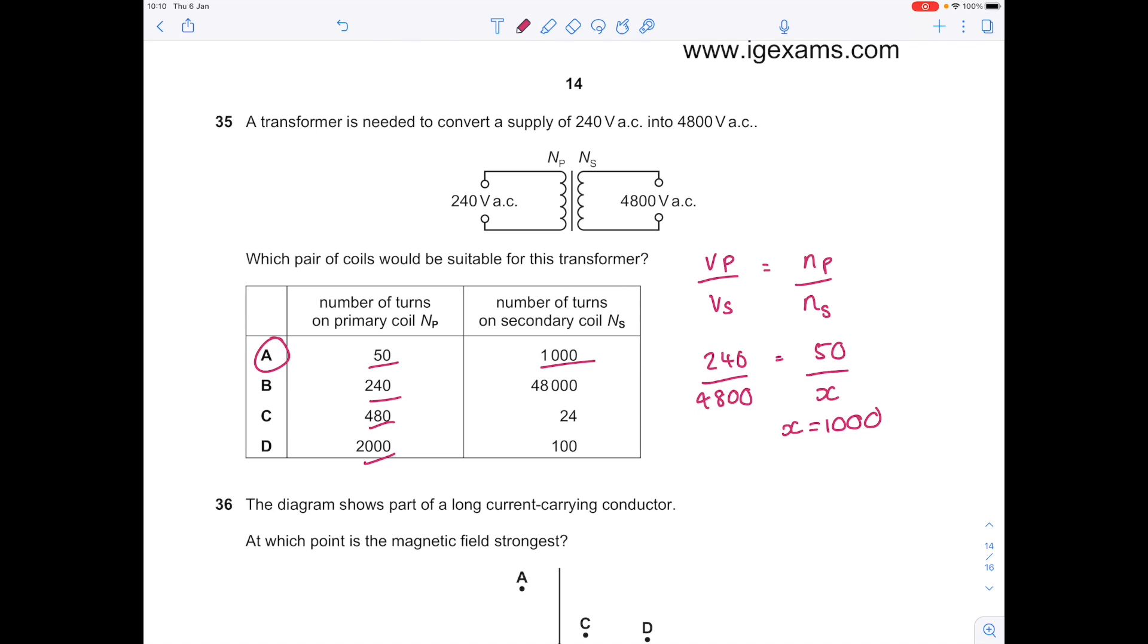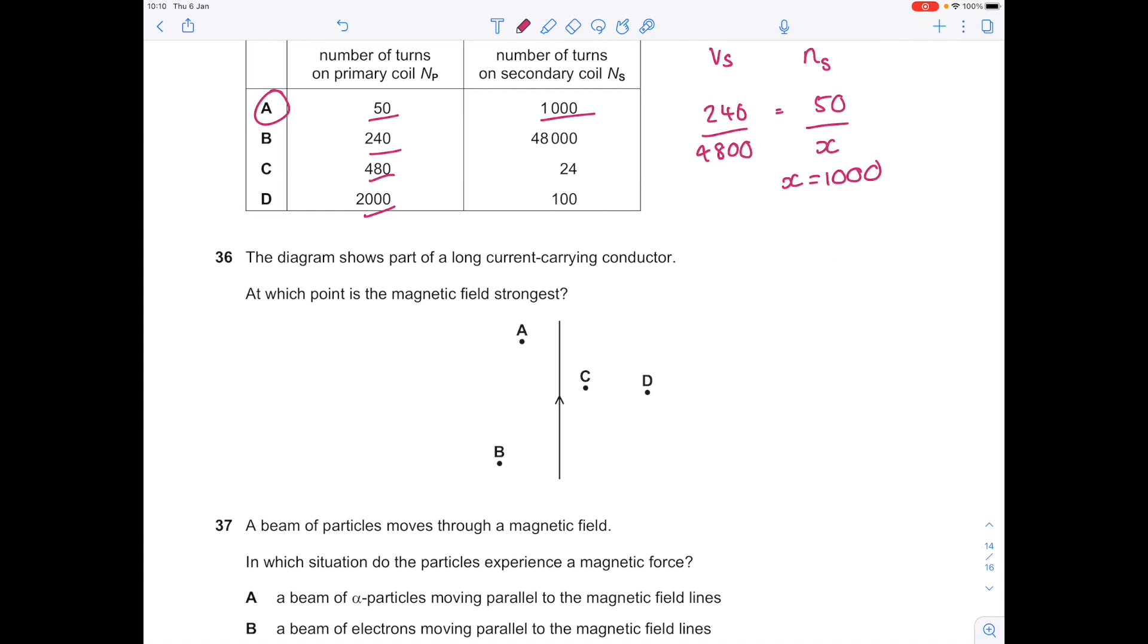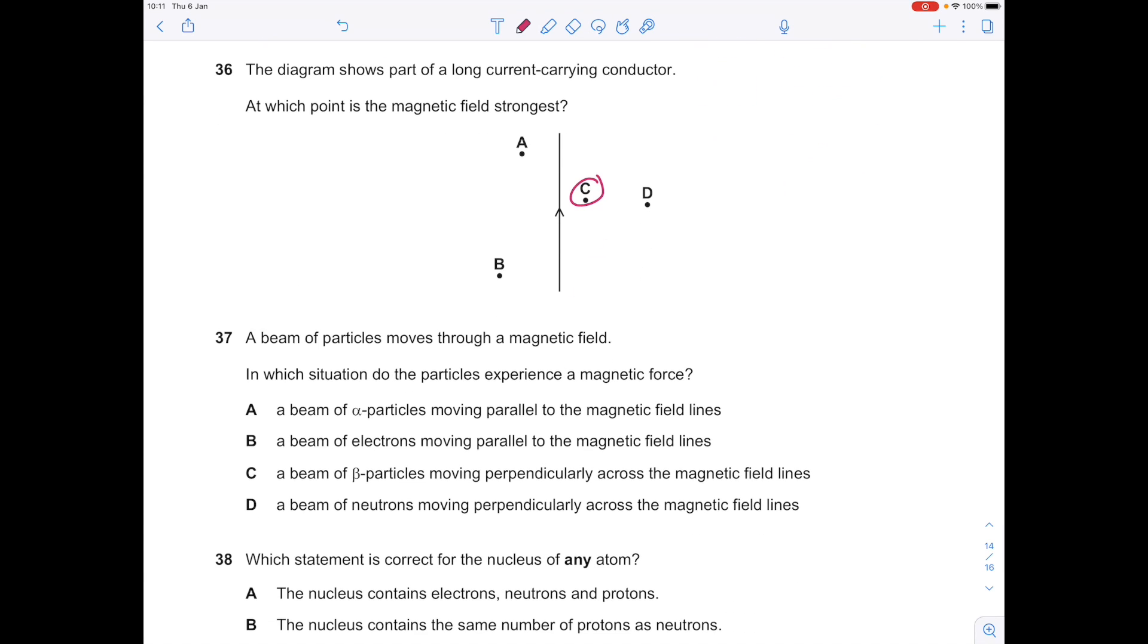The diagram shows part of a long current-carrying conductor. At which point is the magnetic field strongest? It's going to be the point closest to that wire carrying the current, so that's C.